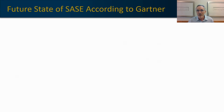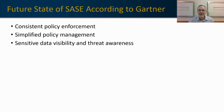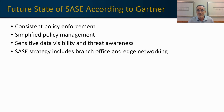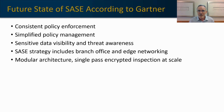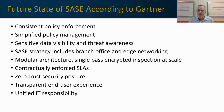Gartner is optimistic about the future. This is where they see SASE going: consistent policy enforcement, simplified policy management, sensitive data visibility and threat awareness, SASE strategies including branch offices and edge networking, a modular architecture with a single-pass encryption inspection construct rather than the multiple-pass construct described earlier, contractually enforced SLAs, zero trust will actually become a reality within the SASE solution, transparent end user experience, and a unified IT responsibility — eliminating those IT silos between network and security.